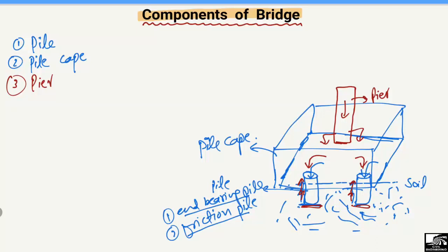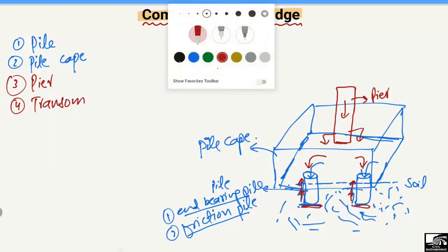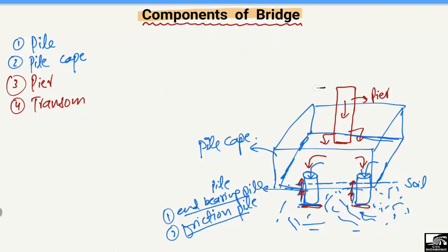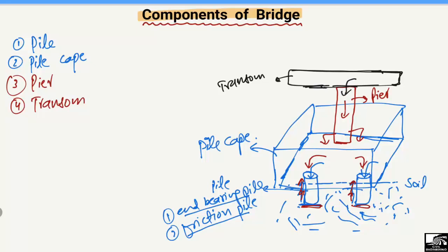The next component in the construction of the bridge is the transom. The transom is one of the important components of the bridge. It helps to take the load from the girder and transfer it to the pier, which then transfers the load in the same way to the pile cap and then to the pile.